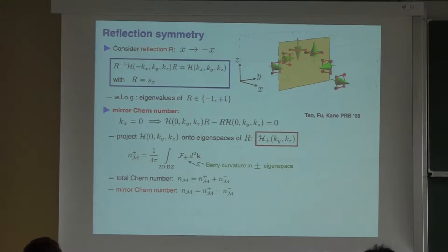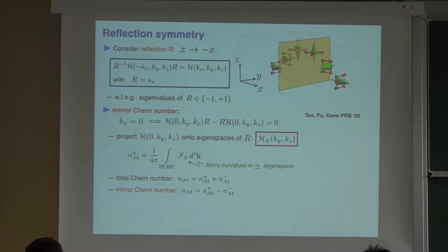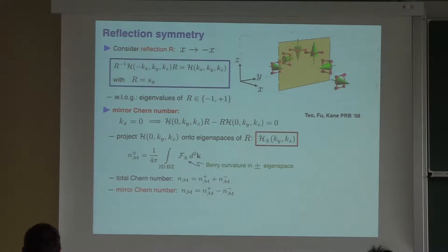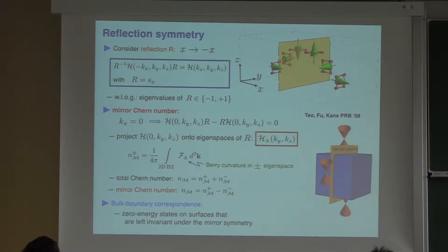Using the idea first proposed by Fu and Kane in 2008: if you restrict yourself to the mirror plane, the Hamiltonian and the mirror operator R commute. Therefore you can block-diagonalize the Hamiltonian with respect to these mirror eigenvalues and define a Chern number for each of the two blocks. You can form two objects: a total Chern number (sum of the two mirror Chern numbers) and a mirror Chern number (difference of the two). Importantly, you can have the total Chern number equal to zero while the mirror Chern number is non-zero — this defines a so-called crystalline topological insulator, which by bulk-boundary correspondence has surface states on surfaces that respect the reflection symmetry.